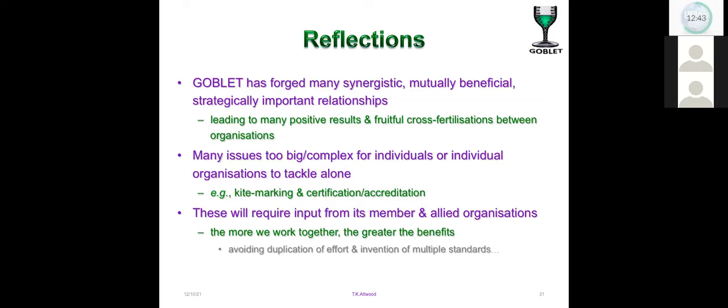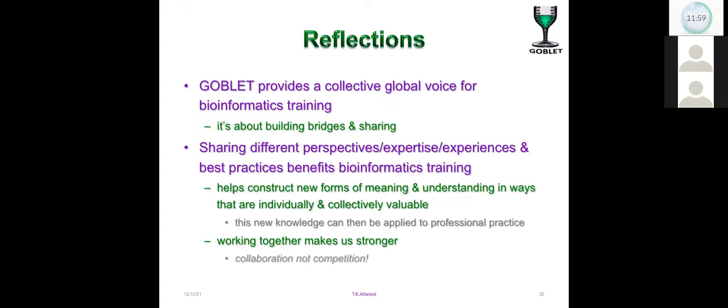Along the way, GOBLET has forged many synergistic, mutually beneficial, strategically important relationships, leading to many positive results and fruitful cross-fertilisations between organisations. Many issues are clearly too big or too complex for individuals or individual organisations to tackle alone. That includes kite marking or certification and accreditation. Tackling these will continue to require input from its members and allied organisations because the more we work together, the greater the benefits and the more we avoid costly duplication of effort and wasteful invention of multiple standards.